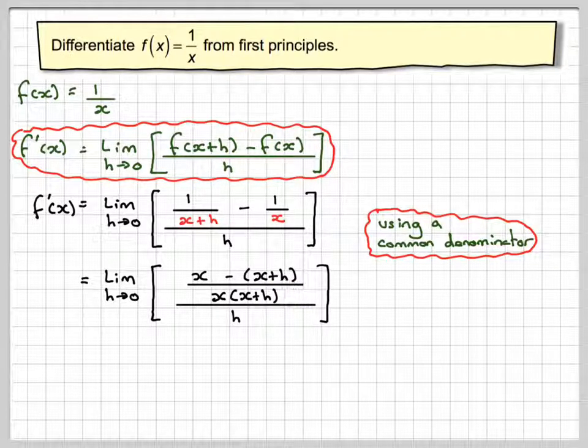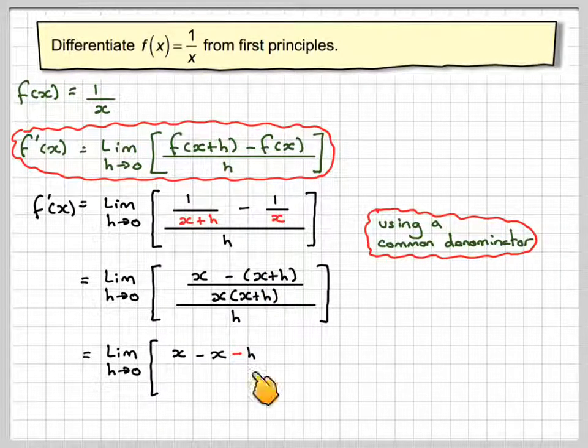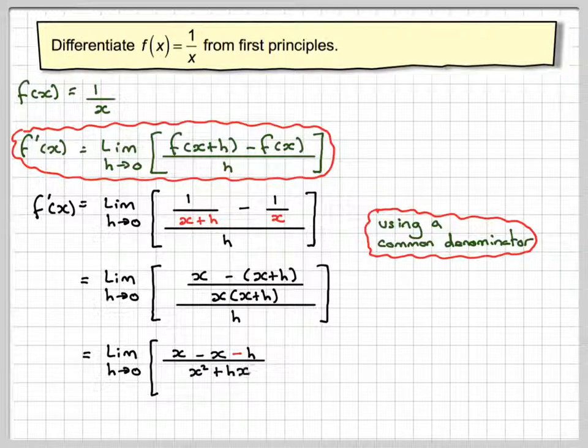Now removing the bracket in the top here, we're going to have the limit as h goes to 0 of [x - x - h] over [x² + hx] all over h.